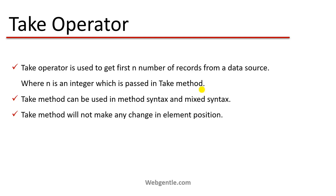First, let's understand what the Take operator is. The Take operator is used to get the first N number of records from a data source. The data source may be any list, any data table, any collection — anything. From that data source, you fetch the first five or first six records — the number of records depends on your requirement. So Take operator is used to select the first N number of records from a data source, and N is basically an integer which we pass into the Take operator.